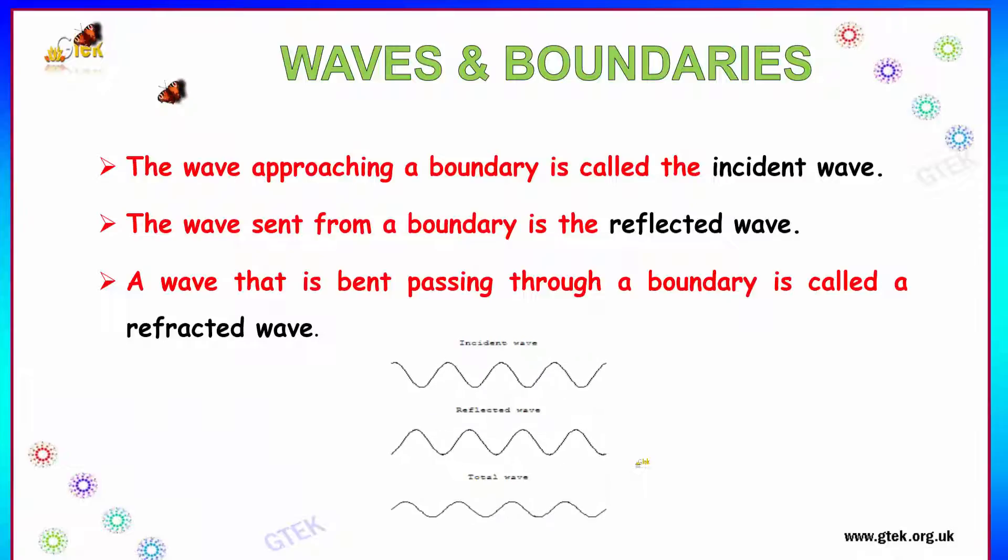The wave approaching a boundary is called the incident wave, and the wave that is sent from a boundary is called reflected wave. The wave that is bent passing through a boundary is called a refracted wave. You can see here the incident wave, the reflected wave and the total wave.